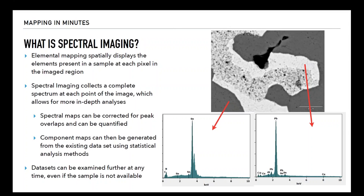Having a full spectrum in each pixel allows you to do more in-depth analyses — for instance, corrections for peak overlaps and full quantification, which older systems or other types of analyses are not able to do. This is a result of new innovations in software as well as hardware. One key benefit is that the dataset persists and can be examined further at any time for other features, even if the sample is no longer available — for instance, if you were doing a cross-section and later wanted to revisit an earlier cross-section level.